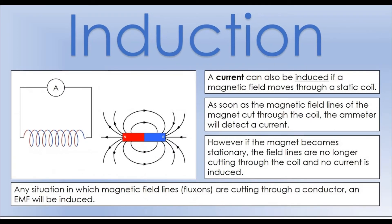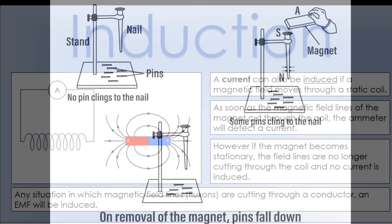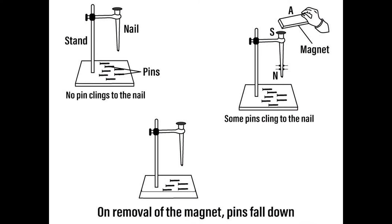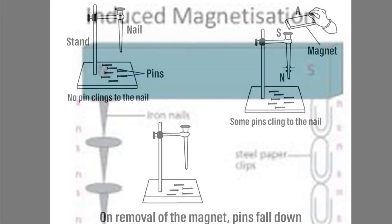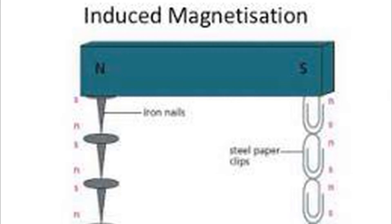Magnetic Induction. The phenomenon by which a magnetic material acquires magnetic properties temporarily when placed in the magnetic field of another magnet is called magnetic induction. The diagrams shown alongside illustrate the phenomenon of induced magnetism.